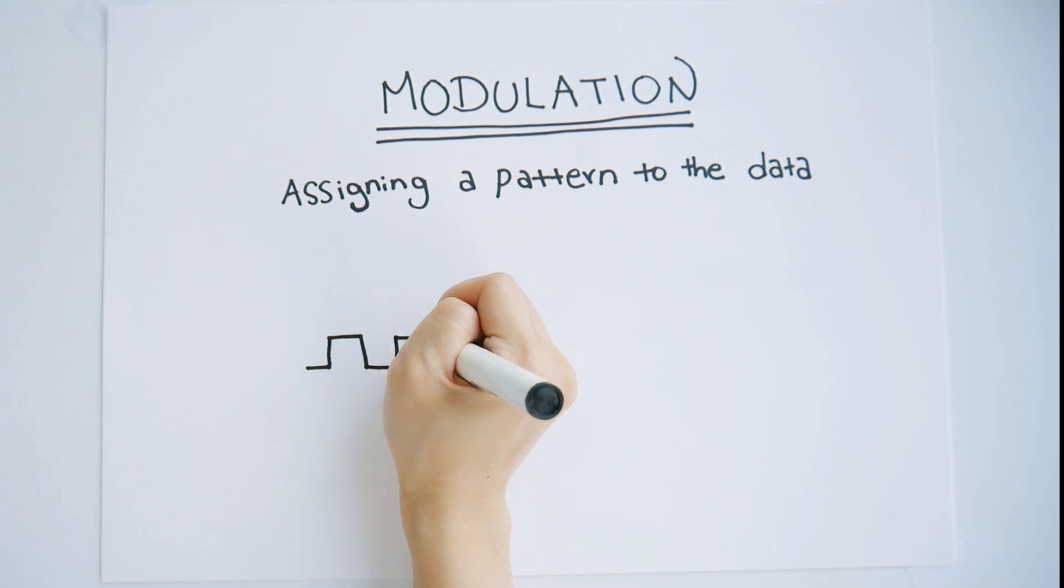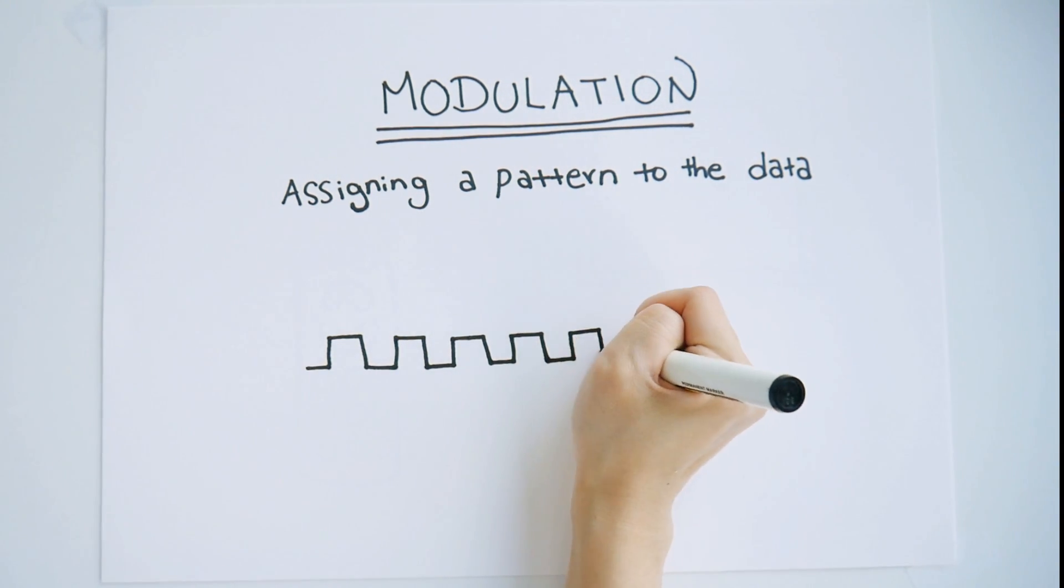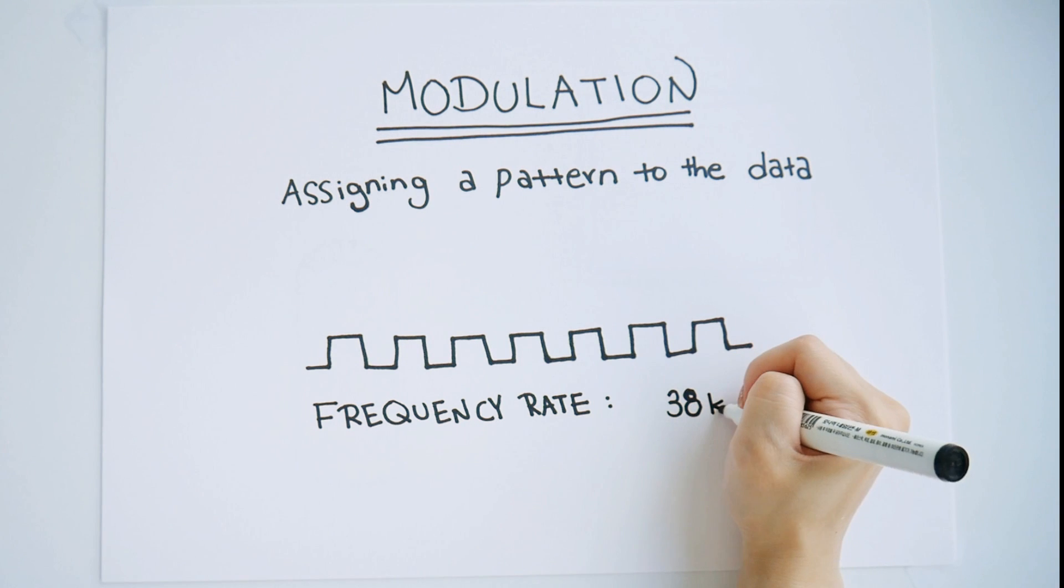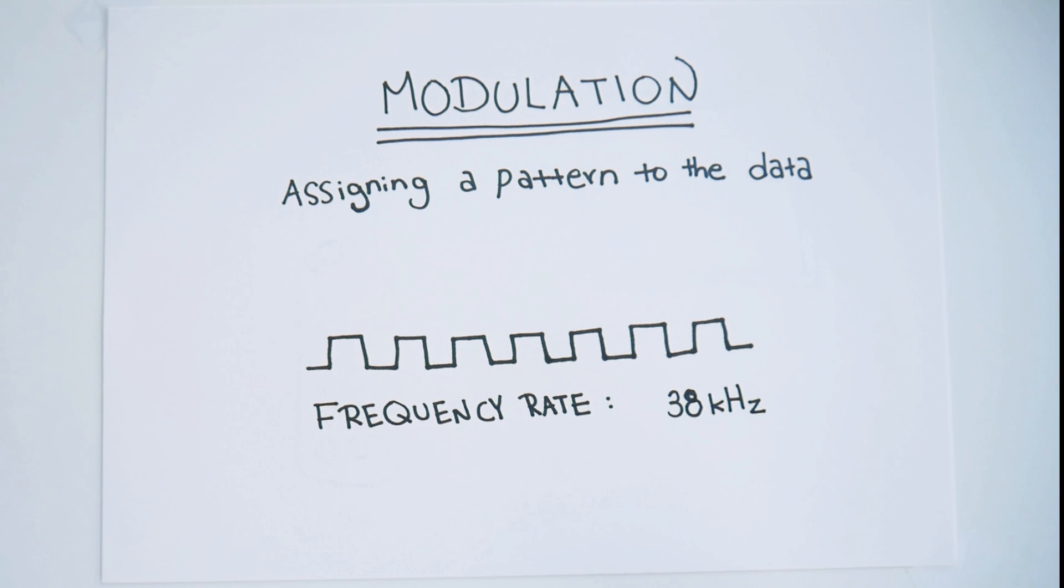A common modulation scheme for IR communication is set to a certain frequency rate that few natural sources have. So an IR transmitter sending data at that frequency would stand out among the ambient infrared lights.